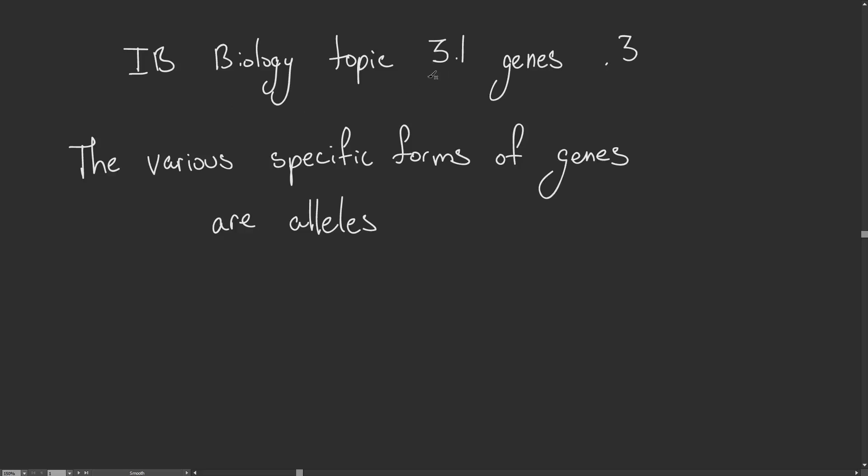IB biology topic 3.1, genes point 3. The various specific forms of genes are alleles. In this video, we'll be looking at how there can be just one gene, but that this one gene has many versions of it, meaning alleles.